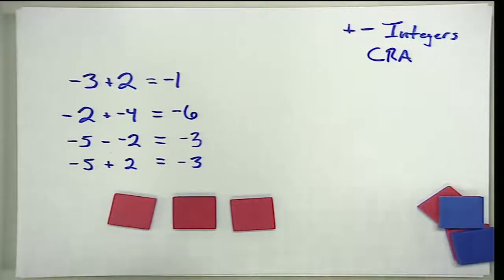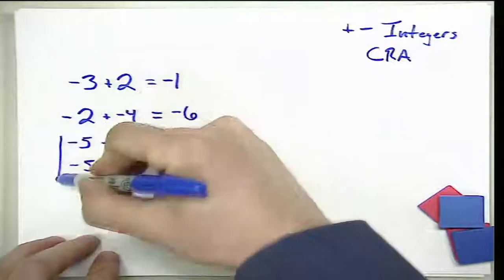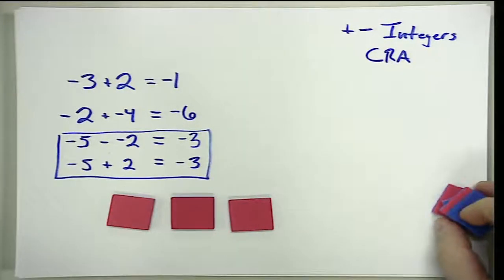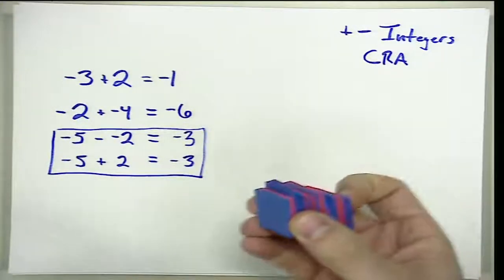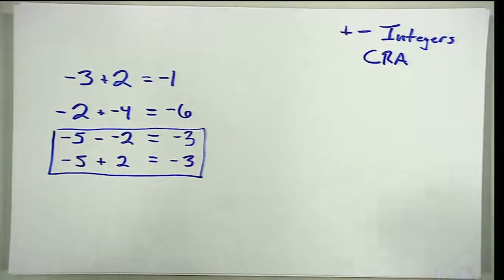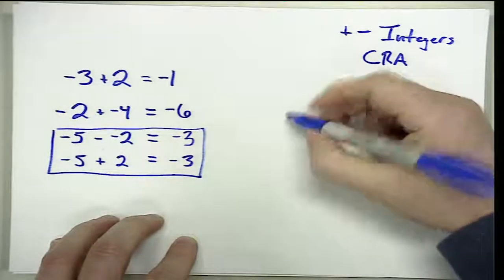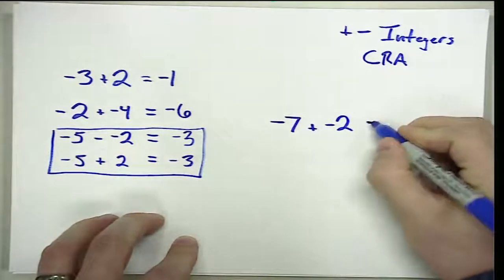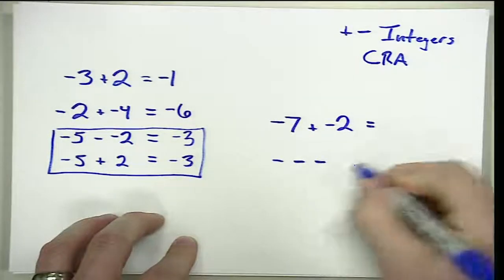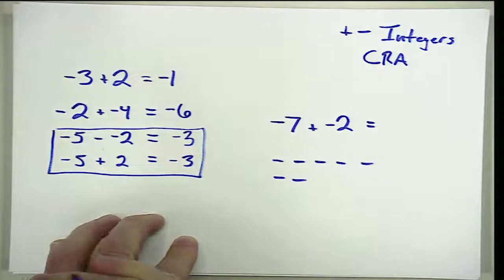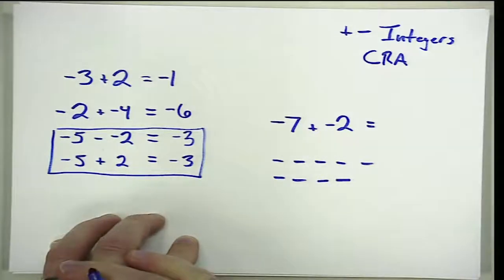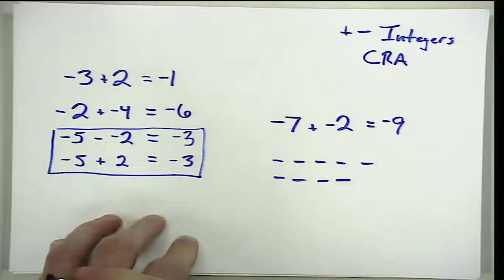As we build this concrete model, we're able to use the model to justify rules like adding the opposite. If we were working on these same kinds of problems as a representation, we're going to stop using the manipulatives and start drawing the representations. So if I had a problem like negative 7 plus negative 2, that is telling me to show negative 7 — so that would be 1, 2, 3, 4, 5, 6, 7 negatives — and I'm supposed to add to that two more negatives.